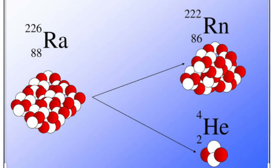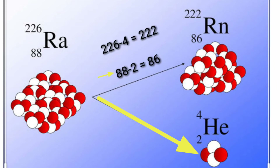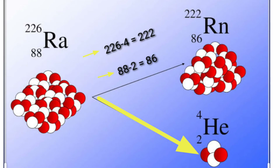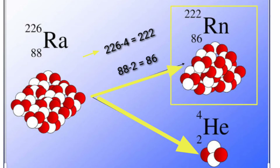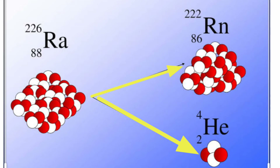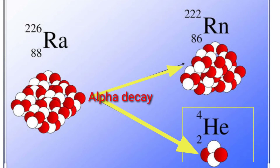Similarly, in the case of radium, with atomic number 88 and atomic mass 226, when a helium particle (alpha particle with atomic number 2 and mass 4) is emitted, the atomic number reduces by 2 to give 86, and atomic mass reduces by 4 to give 222. So the daughter nuclei of radium becomes the element with atomic number 86 and mass 222. By the emission of this helium particle, radium undergoes alpha decay and the daughter nuclei becomes more stable.